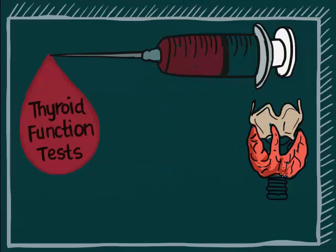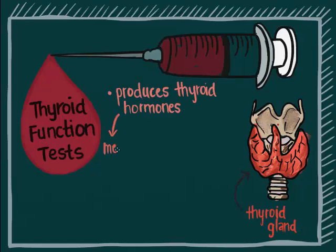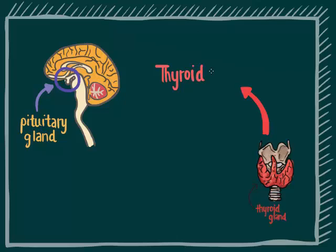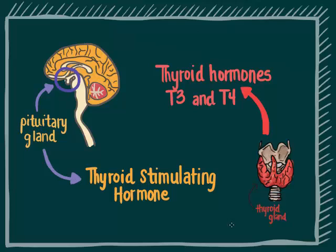Thyroid function tests. The thyroid produces hormones that influence metabolism, growth and development, and body temperature. The thyroid gland produces two hormones: triiodothyronine (T3) and thyroxine (T4). These hormones are produced when the pituitary gland releases thyroid stimulating hormone (TSH), which triggers the release of the thyroid hormones.